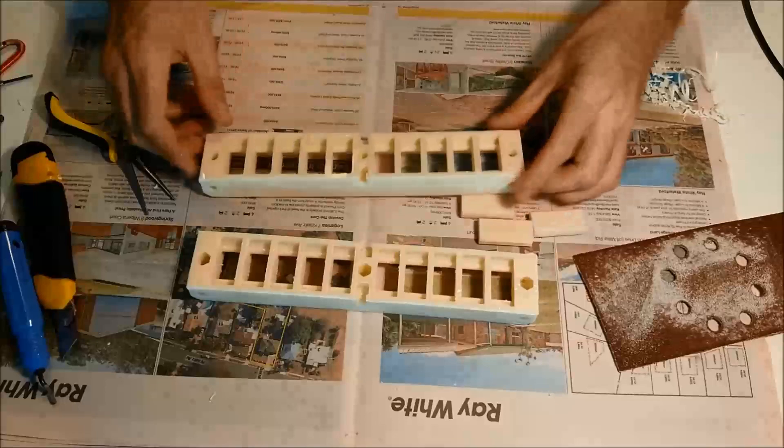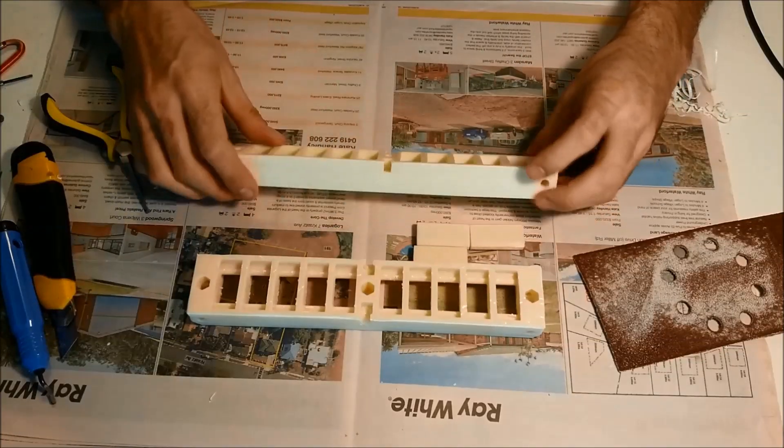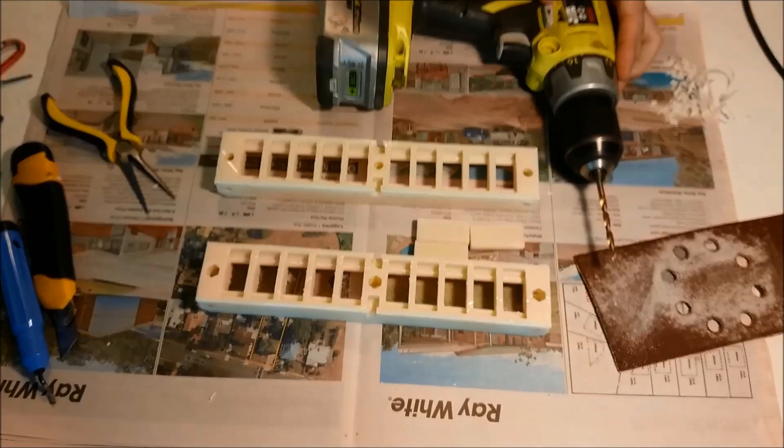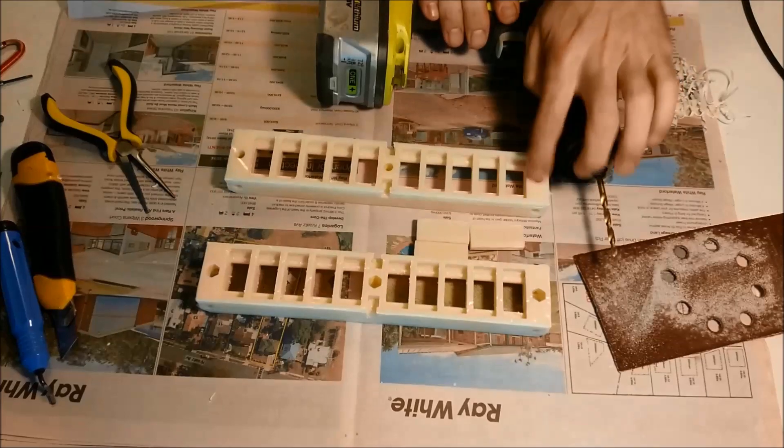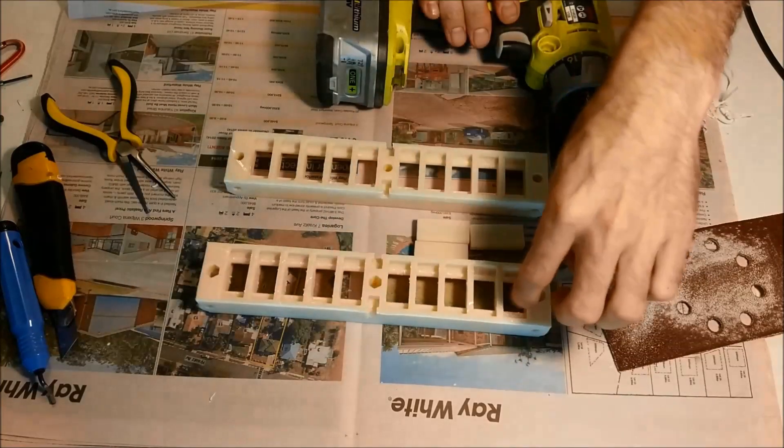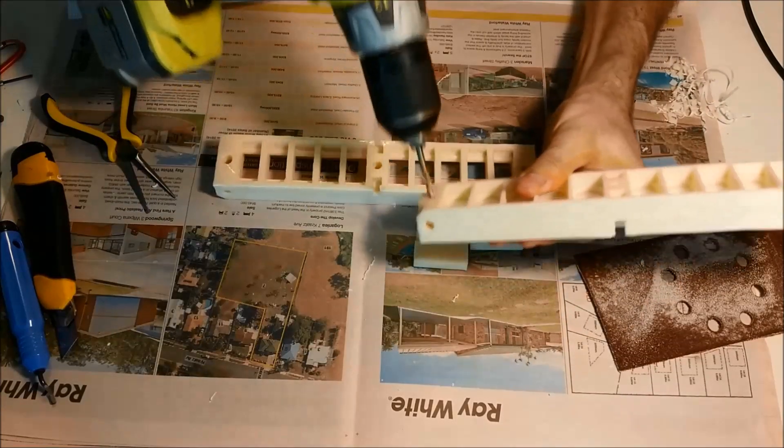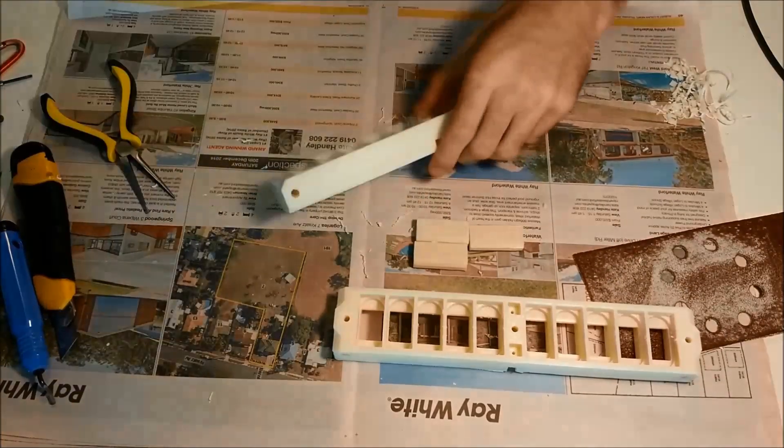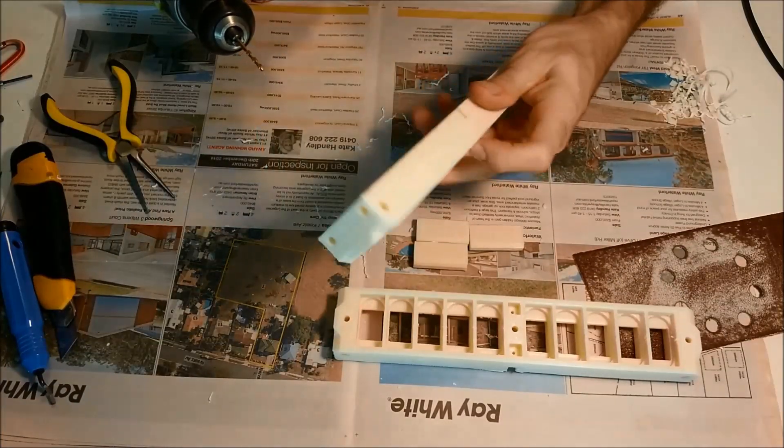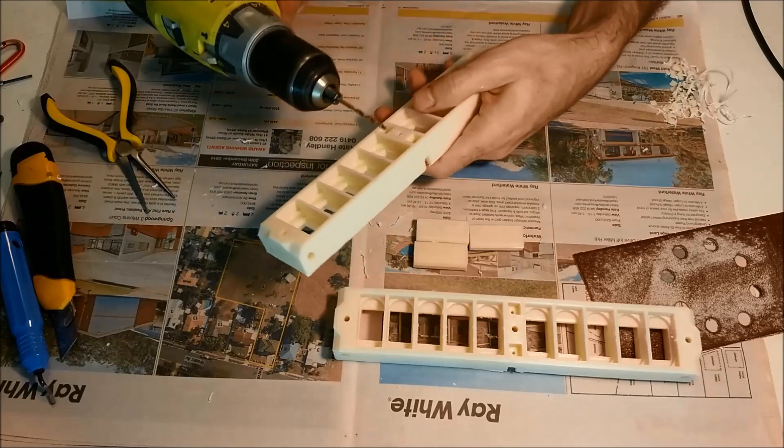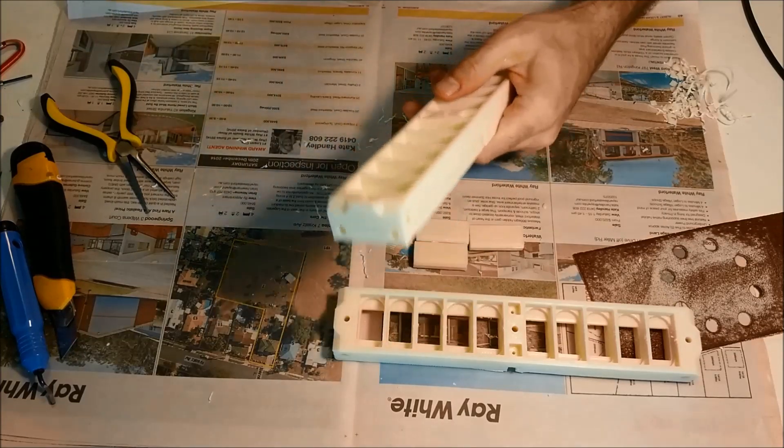So grab one of your modules. The next job is going to be just to drill out some of these holes. I've just got an M4.5 drill, I'm just going to drill out these six holes here. And there's also four terminal holes to drill out. I'm going to use an M3 drill bit for that.